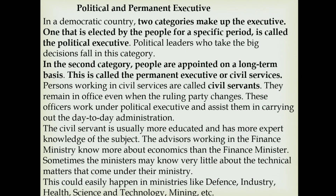Now let us try to understand the differences between political and permanent executive. In a democratic country, two categories make up the executive. One that is elected by the people for a specific period is called the political executive — political leaders who take the big decisions fall in this category. In the second category, people are appointed on a long-term basis. This is called the permanent executive or civil services. Persons working in civil services are called civil servants.